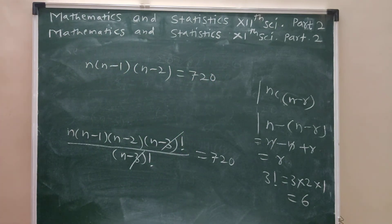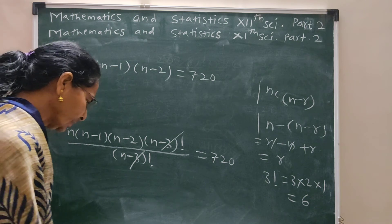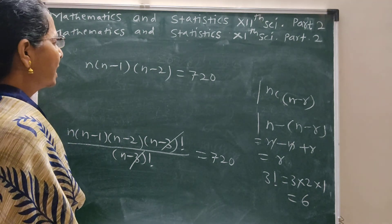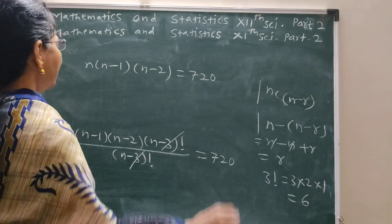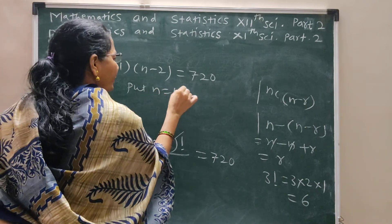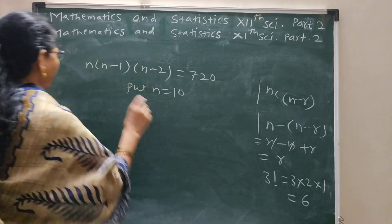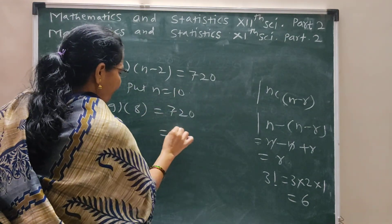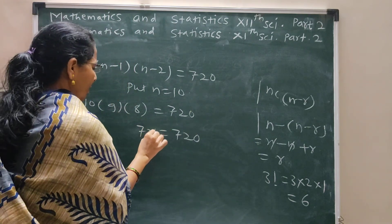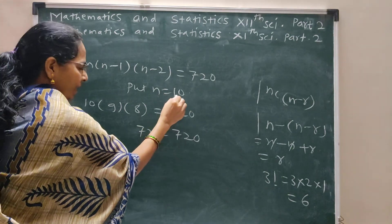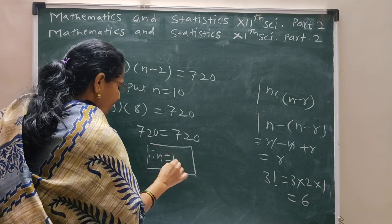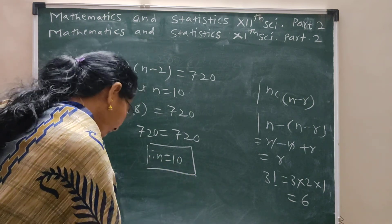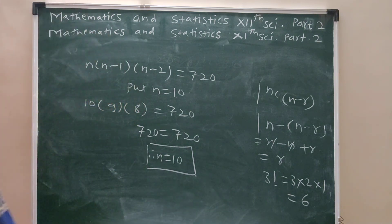Now find the value of N by trial. If we put N equals 10, then 10 times 9 times 8 equals 720. This side equals 720, both sides are equal, therefore N equals 10. So the answers are R equals 3 and N equals 10.